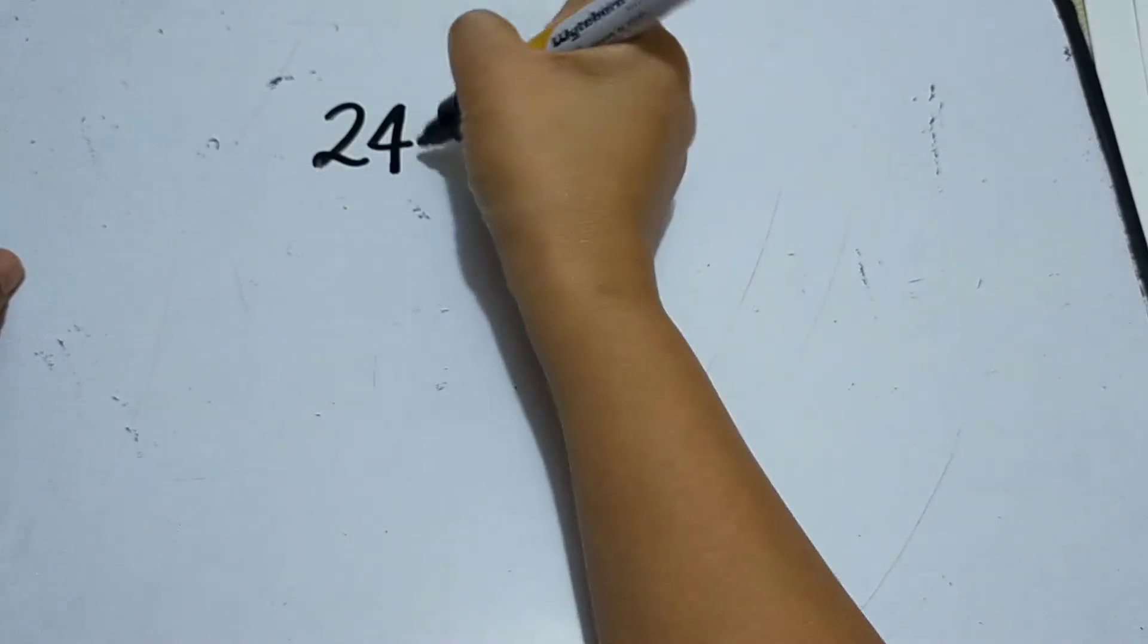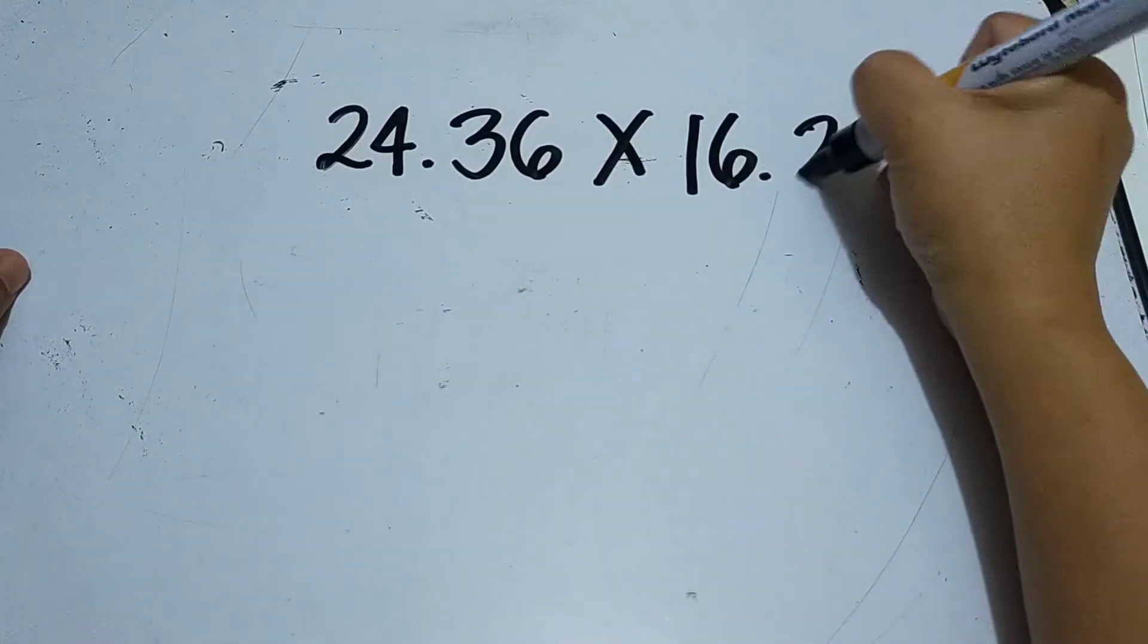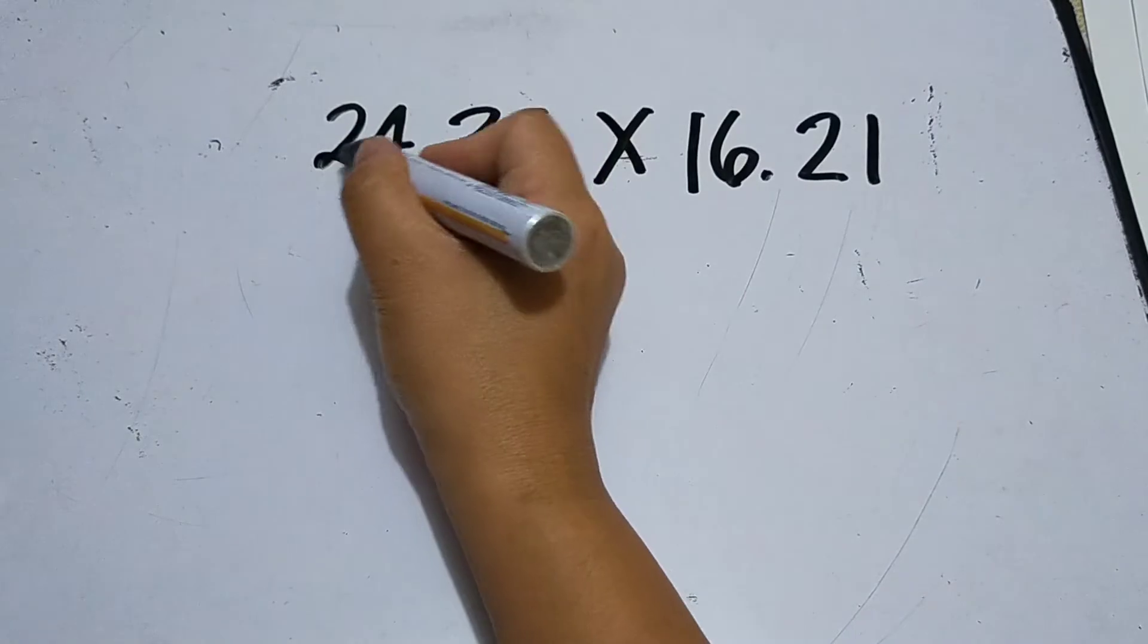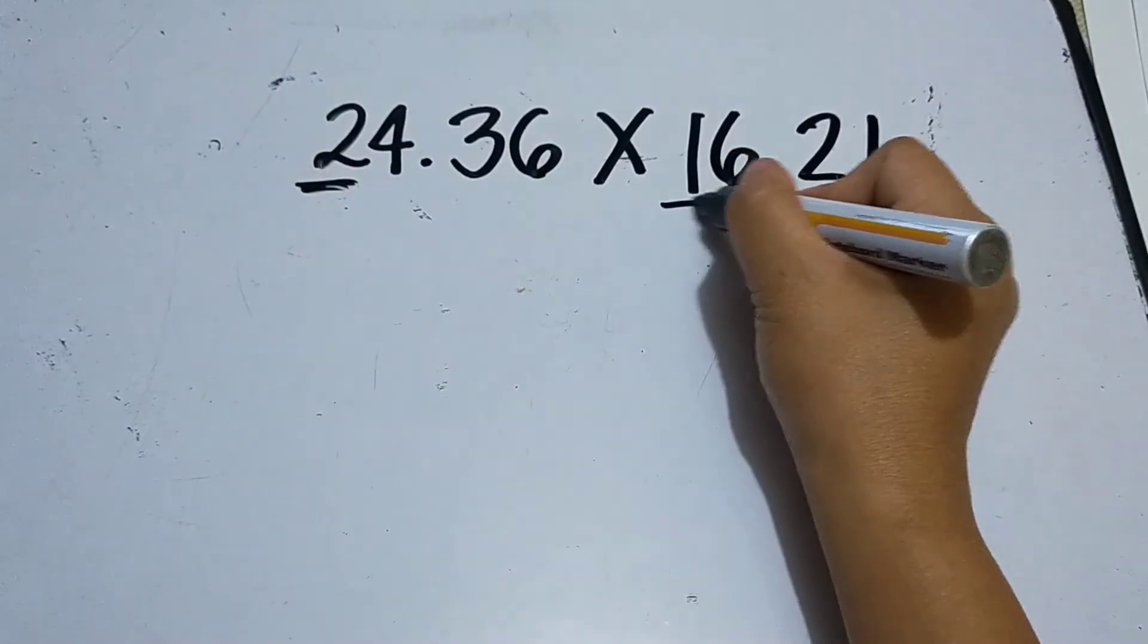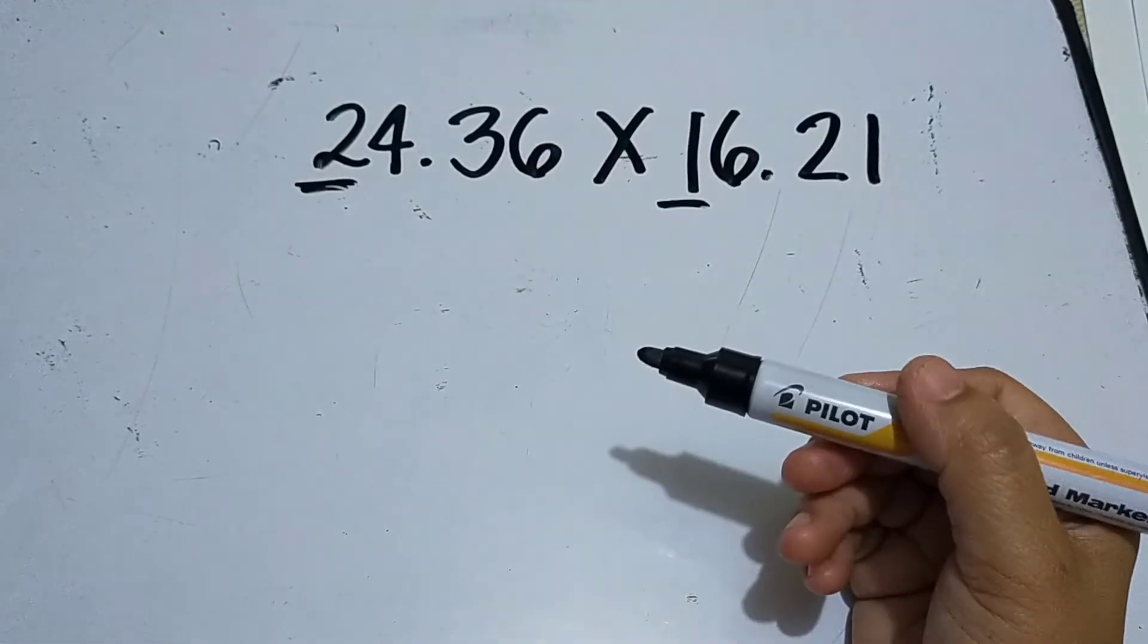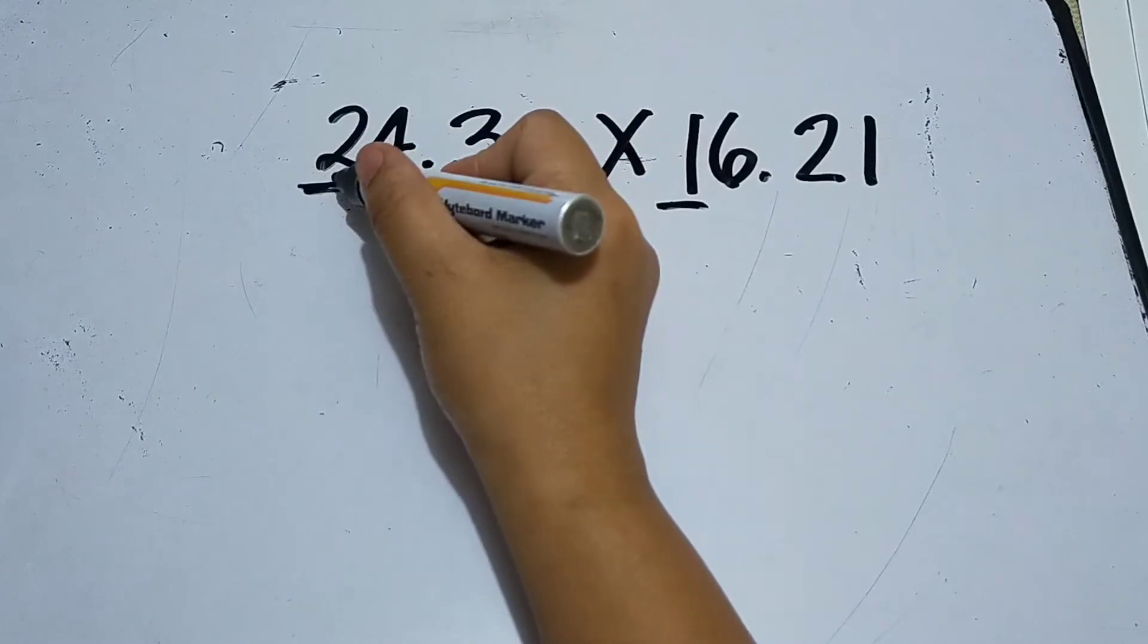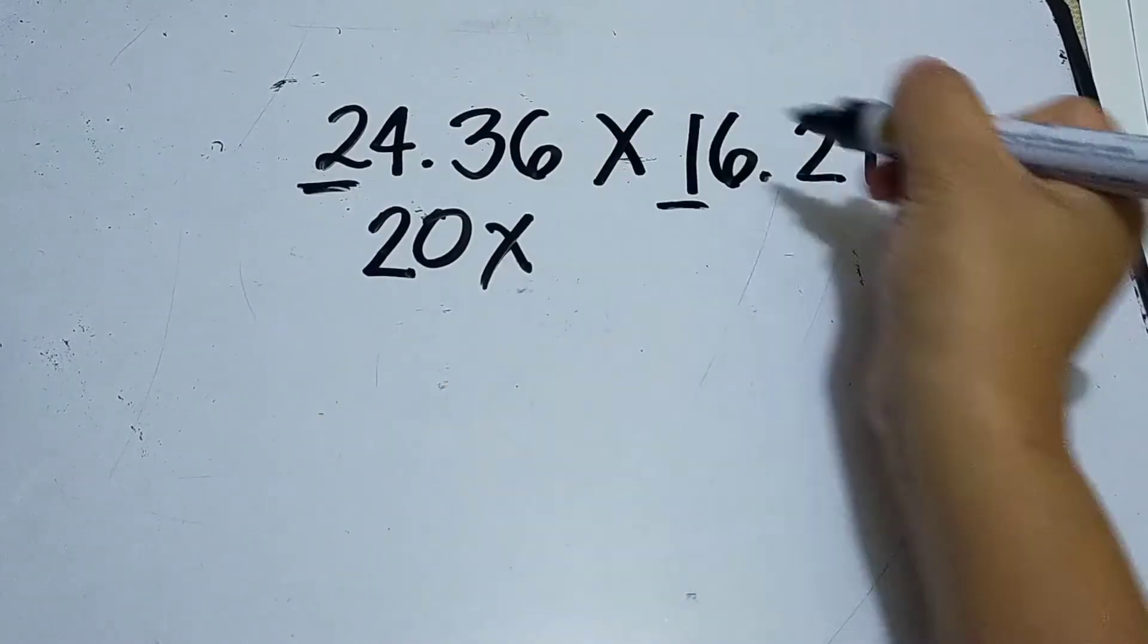24.36 hundred times 16.21 hundred. Same procedure - we round it off to the nearest highest possible place value. This digit has the highest place value in our multiplicand, and this one in the multiplier. That means nearest tens, right? We're going to round off the given into nearest tens. The answer here when we round this into nearest tens is twenty times...